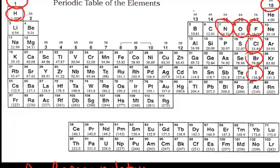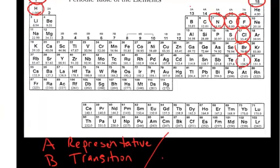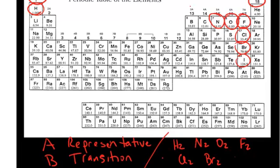What we mean when we say that they exist as diatomic elements is that in nature you will find hydrogen as H2, nitrogen as N2, oxygen as O2, fluorine as F2, chlorine as Cl2, bromine as Br2, and iodine as I2.